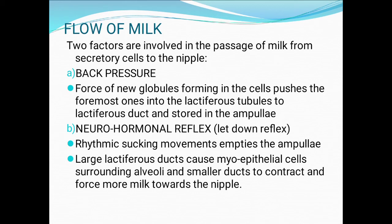Next, flow of milk: two factors are involved in the passage of milk from secretory cells to the nipple. First, back pressure — the force of new globules forming in the cells pushes the foremost ones into the lactiferous tubules to the lactiferous ducts, where they are stored in the ampullae. Second, neurohormonal reflex — rhythmic suction empties the ampullae and large lactiferous ducts, causing myoepithelial cells surrounding alveoli and smaller ducts to contract and force more milk toward the nipple.